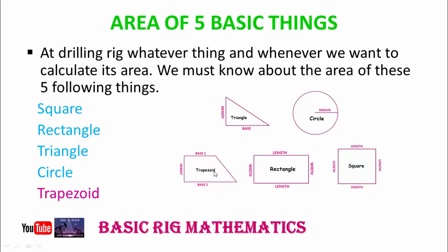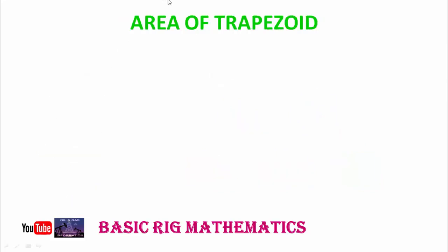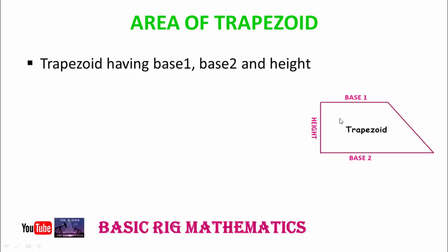But in this part we will discuss only the trapezoid. Let's start. Area of trapezoid - as you see in the picture, there is a trapezoid. This is the height, the above one is base 1, the below is base 2.